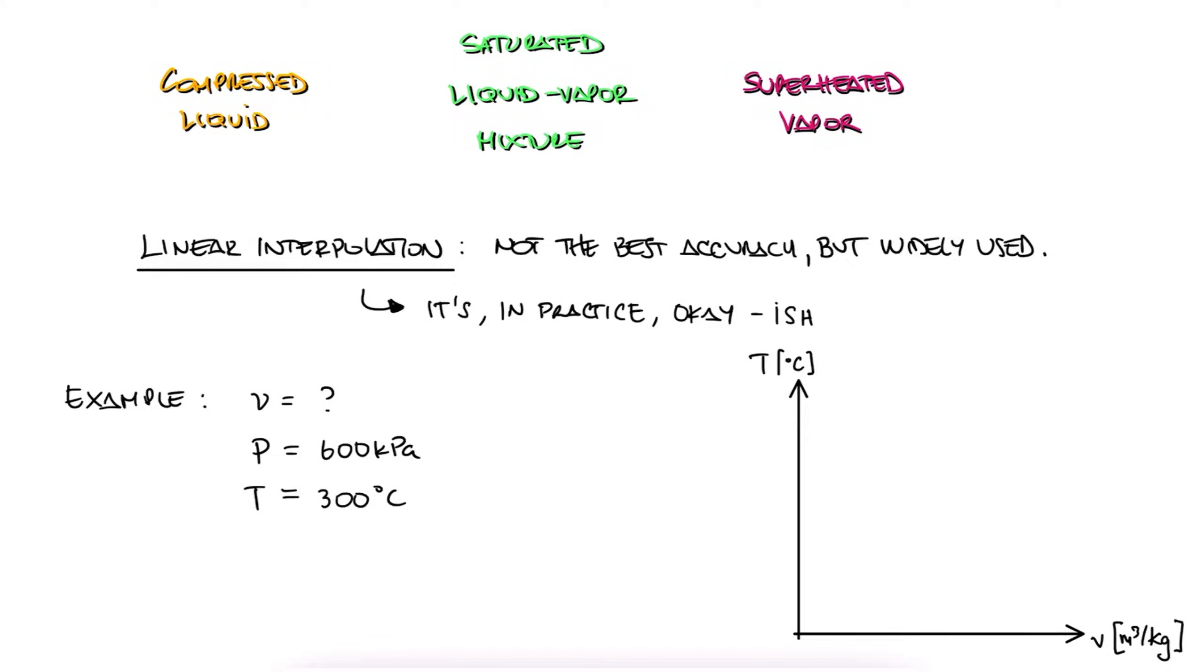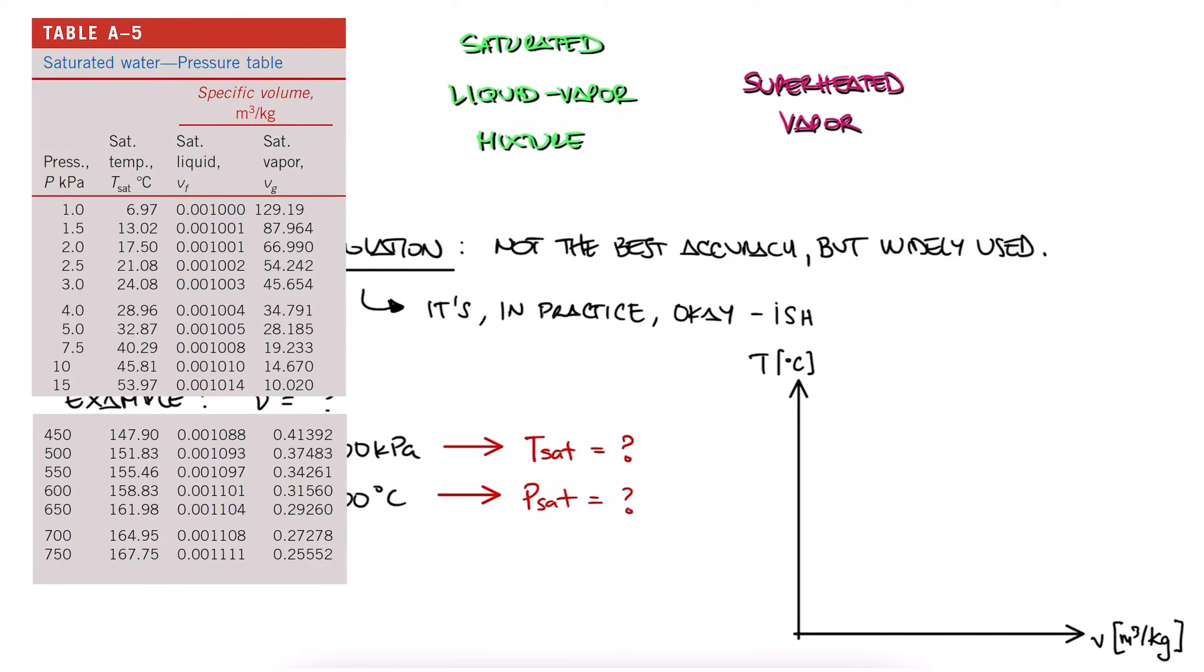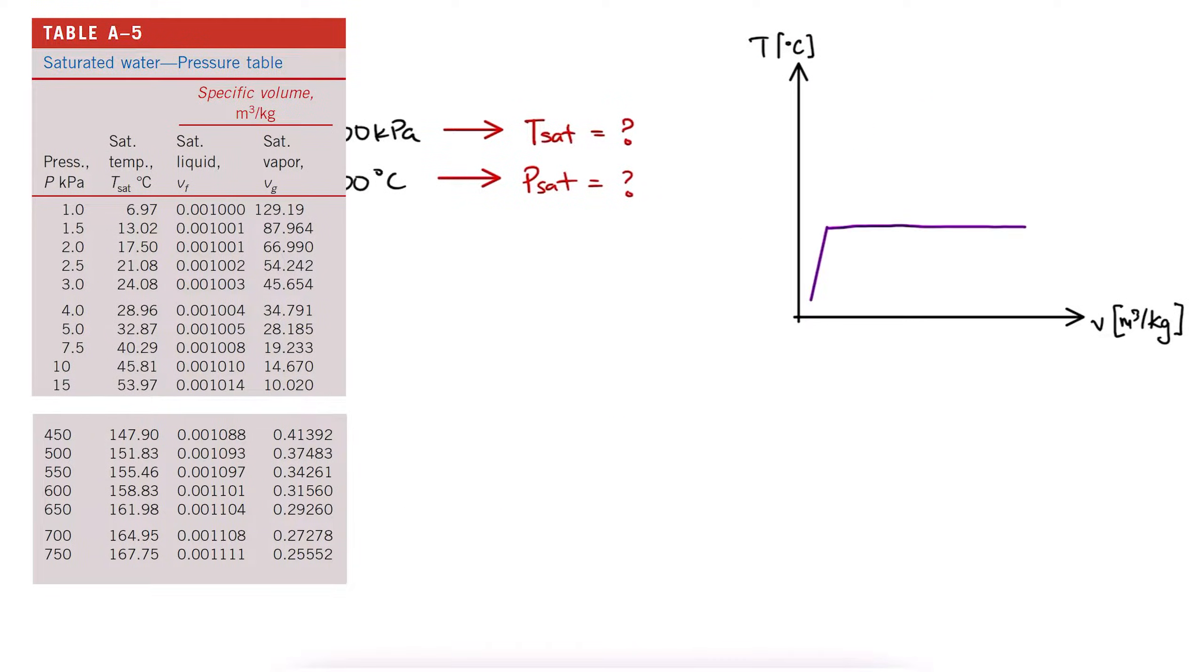If it's not completely apparent what phase the water is in, we can use our saturated tables to see what the saturation temperature is for 600 kilopascals, or what the saturation pressure is for 300 degrees Celsius. If we use the pressure table for saturated water, we see that for a pressure of 600 kilopascals, the saturation temperature is 158 Celsius.